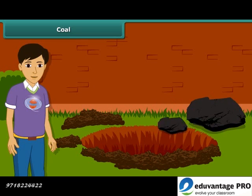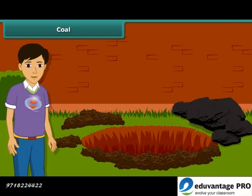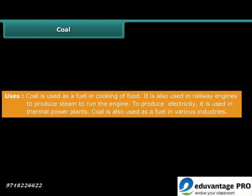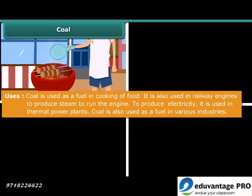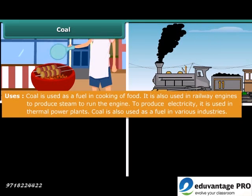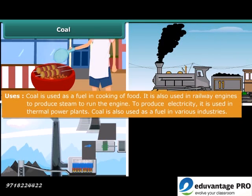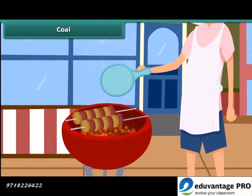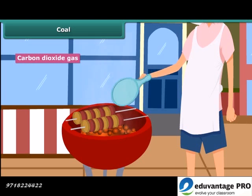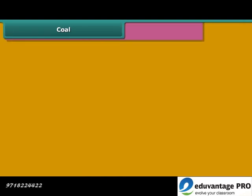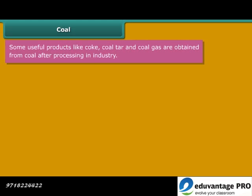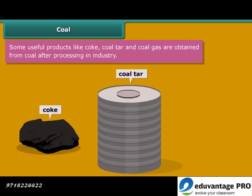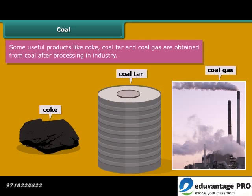You may have seen coal in your surroundings. It is hard and black in color. Coal is used for a variety of purposes such as cooking food, running railway engines, thermal plants and various industries. After heating in air, it starts burning and produces carbon dioxide gas. You will be surprised to know that some useful by-products of coal — like coke, coal tar and coal gas — are obtained directly from coal.